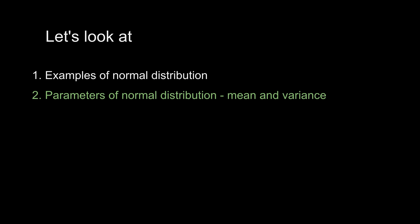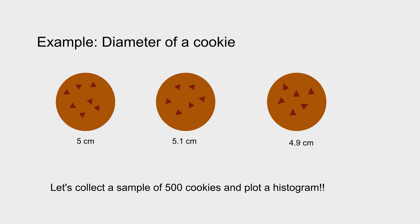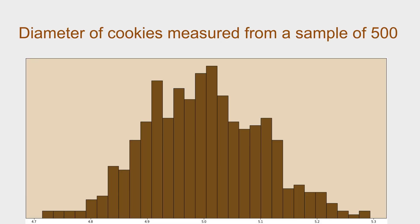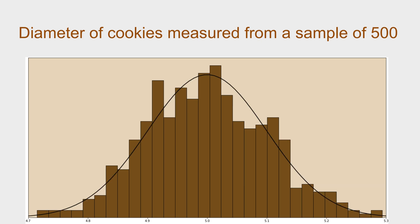Now let's get right into the parameters of normal distribution. We did discuss that size of objects follows a normal distribution, so let's look at the diameter of a cookie. I go to a factory that manufactures cookies and take three samples. The diameters are 5 cm, 5.1, and 4.9, giving an idea that these cookies are about the same size with slight variation. I then collect a sample of 500 cookies and plot a histogram, and the shape starts looking like a normal distribution.